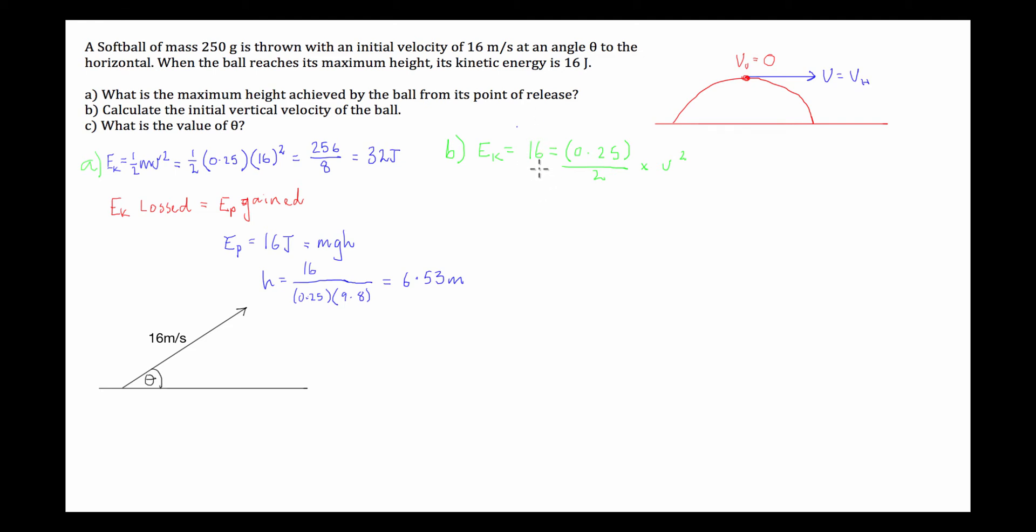Okay, so what we can do now is we can just rearrange this. We can go 16 times 2, which is 32. Then we're going to divide it by 0.25, which is like timesing it by 4. So, that's going to just equal 128. So, we have v will equal the square root of 128, which is equal to 8 square root 2. Or, a less precise answer, 11.3.